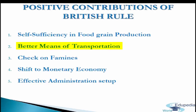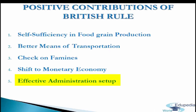Second: better means of transportation. Development of roads and railways provided cheap and rapid transport system and opened up new opportunities of economic and social growth. Third: check on famines. Roads and railways worked as a great check on the occurrence and impact of famines, as food supplies could be transported to the affected areas in case of droughts. Fourth: shift to monetary economy. British rule helped Indian economy to shift from barter system of exchange — exchange of goods for goods — to monetary system of exchange. And the last positive contribution is effective administrative setup. The British government had an efficient administrative system which served as a ready reckoner for Indian politicians.